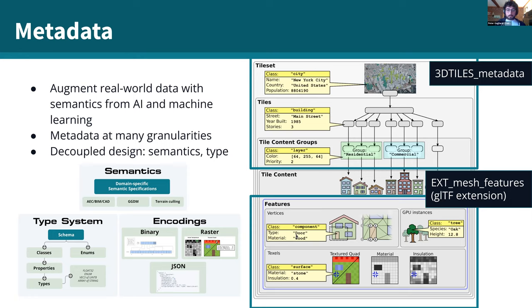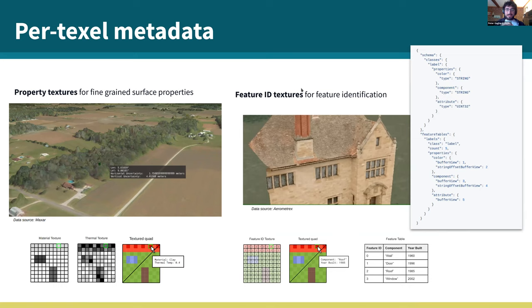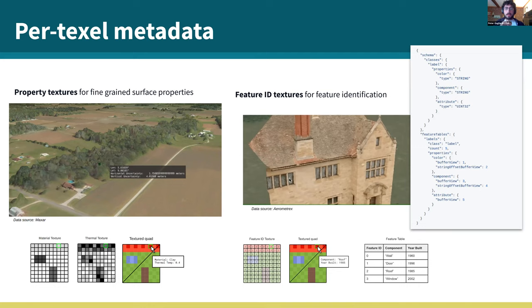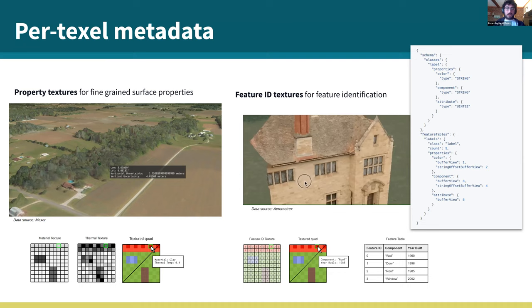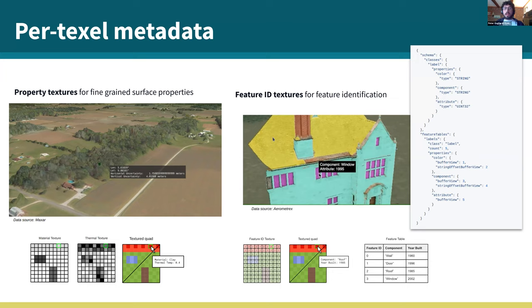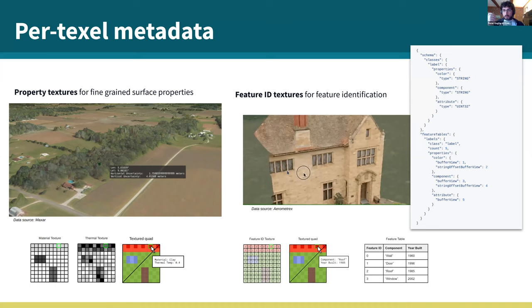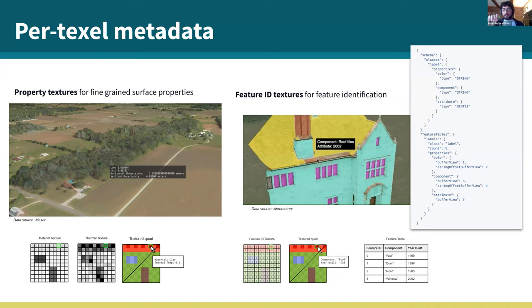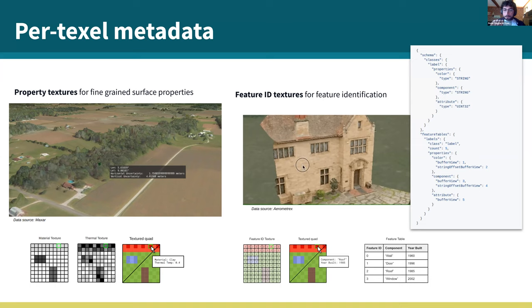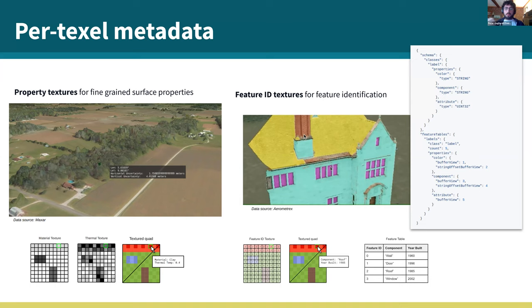Texture metadata is a new feature that allows much higher frequency metadata. There are two flavors: property textures let you store per-texel values — think of a heat map where every texel has a different value. Feature ID textures are great for photogrammetry classification — instead of storing values, you store which feature each texel belongs to. Zero might represent a wall, one a roof, and from there you look up properties in a table: the wall has these properties, the roof has these properties.